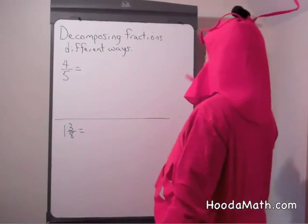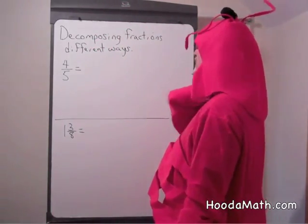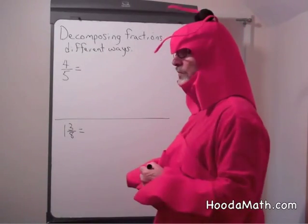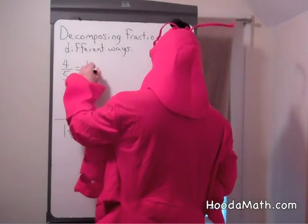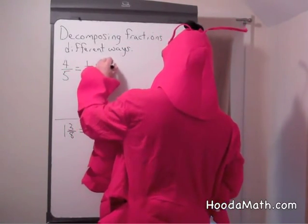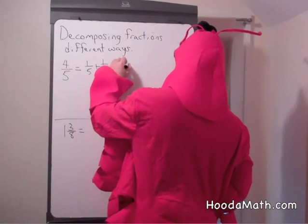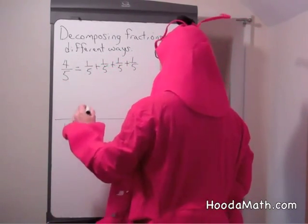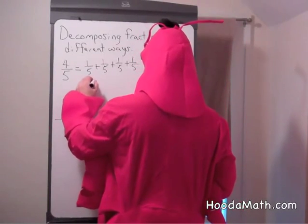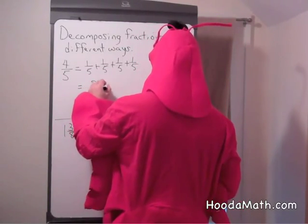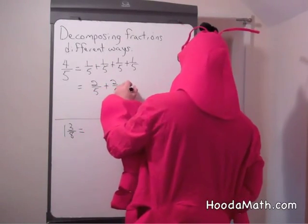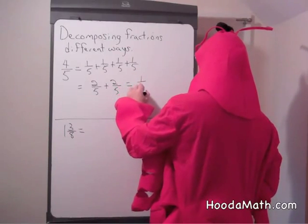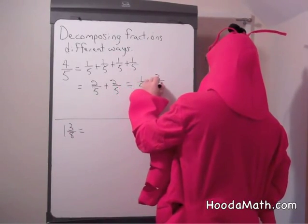Okay, so we're going to decompose fractions a couple different ways. If we had four-fifths, we could write that as one-fifth plus one-fifth plus one-fifth plus one-fifth, or write one-fifth four times. We could write it as two-fifths plus two-fifths. And of course, we could write it as one-fifth plus three-fifths.